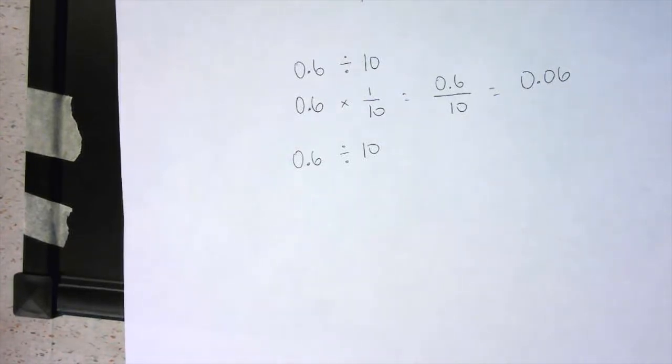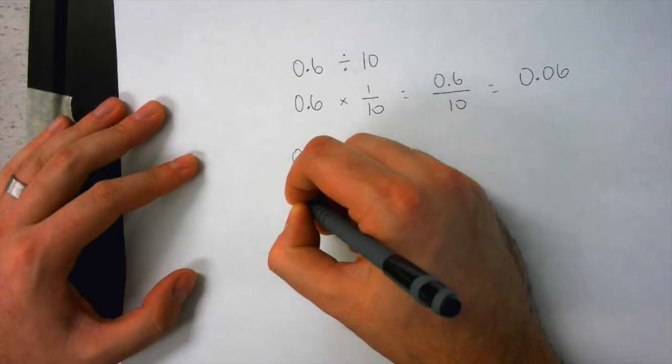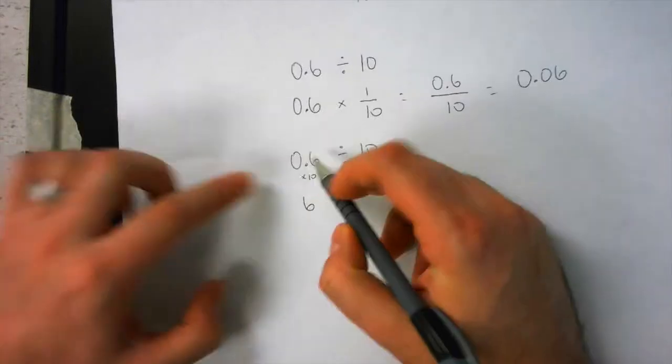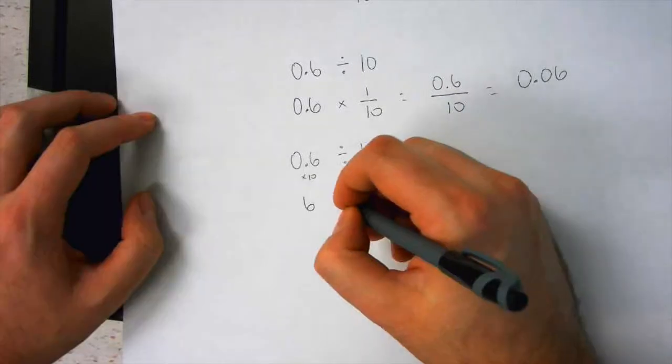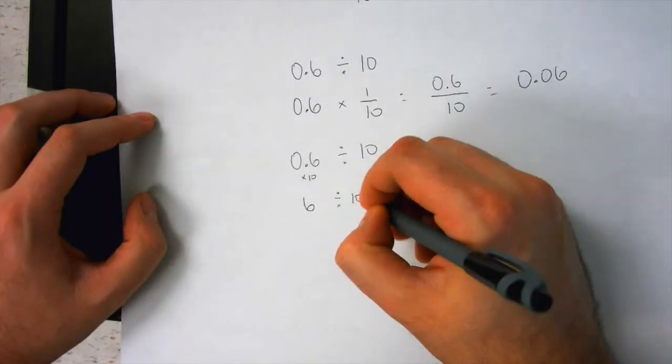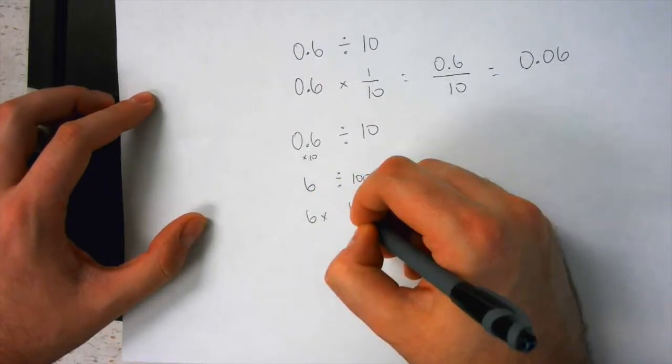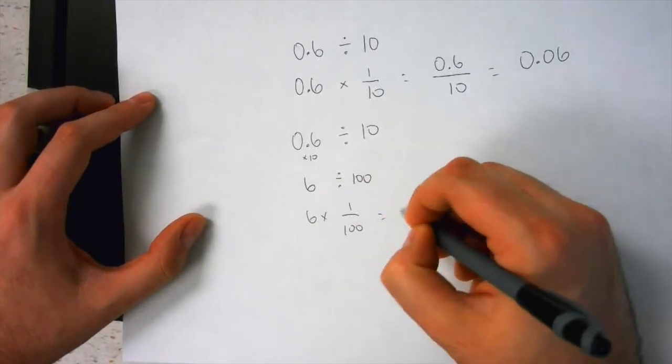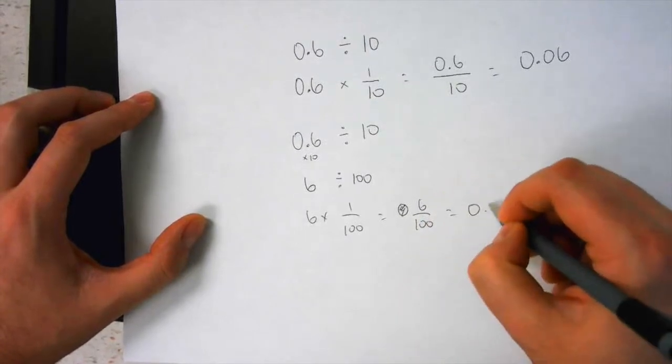You multiply it by what? 10. Perfect. So if I multiply this by 10, it's 6. But if I multiply this by 10, I need to multiply this by 10. Right? And now it becomes divided by 100, which now equals 6 times 1 over 100 equals 6 over 100 equals 0.06.